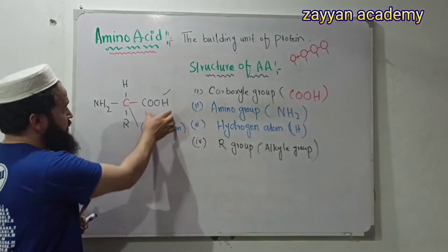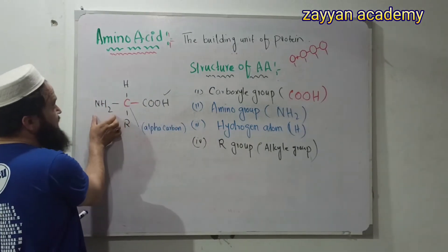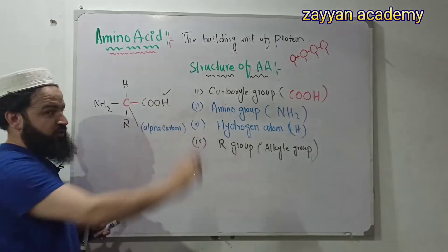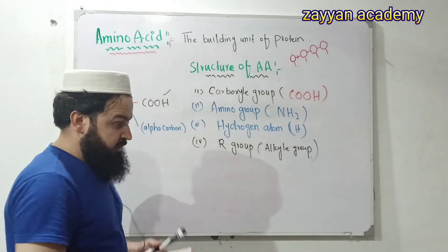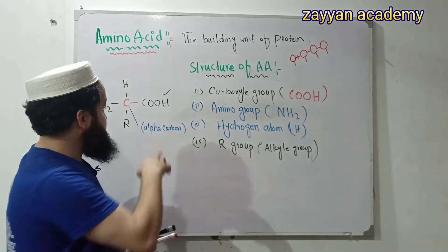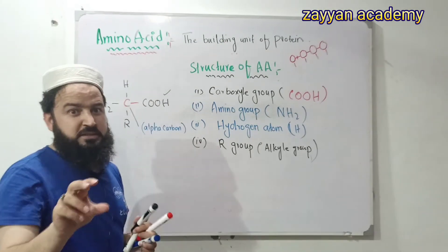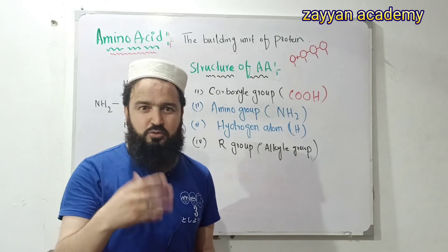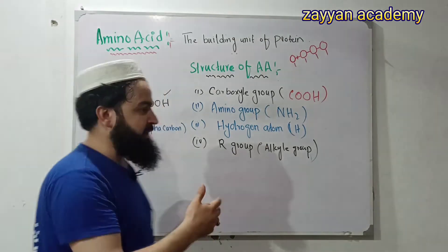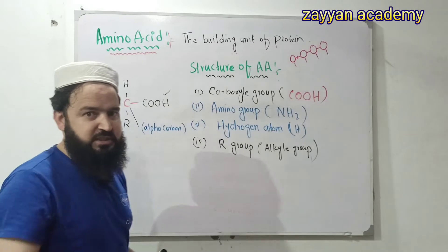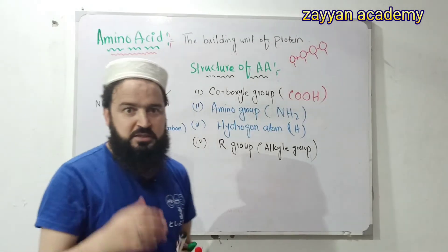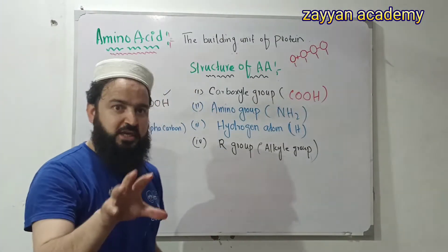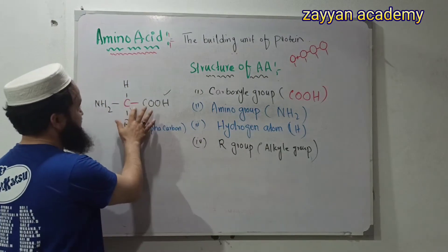Then the question is, if you have two functional groups, you will have two functions. When you say the carboxyl — the carboxyl, the amine — in organic chemistry, the carbon adjacent to the carboxyl is the alpha carbon.